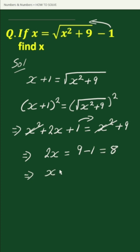This equals x equals 8 by 2. Here 8 and 2 will be reduced by 2. 2 will be reduced 1 time and 8 will be reduced 4 times.